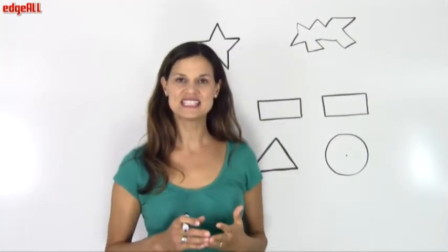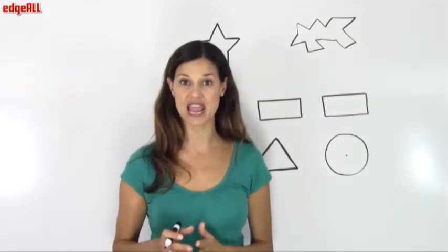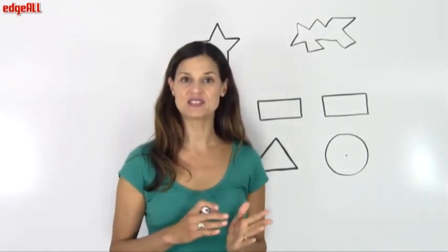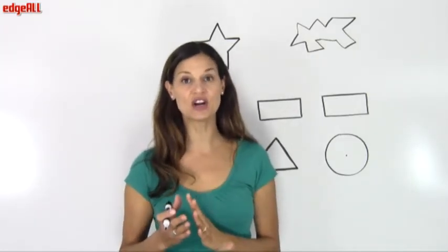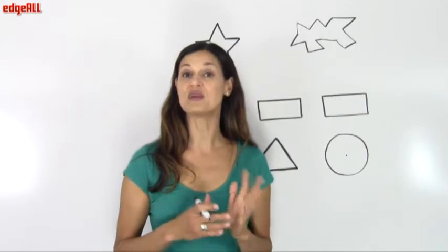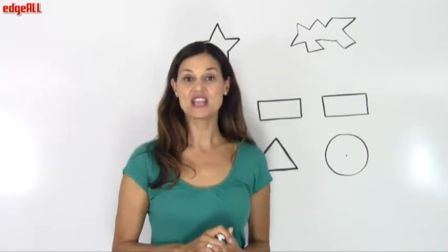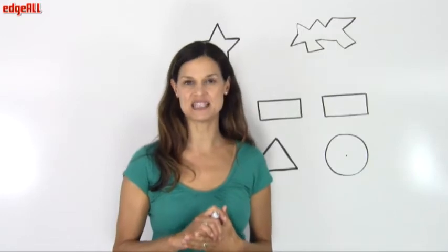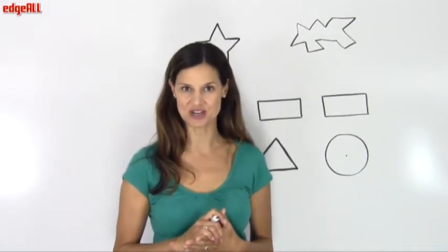A line of symmetry is a line that can be drawn through a shape so that the shapes on either side of the line are mirror images of each other, or are a reflection of each other. Shapes that have at least one line of symmetry are considered symmetrical.